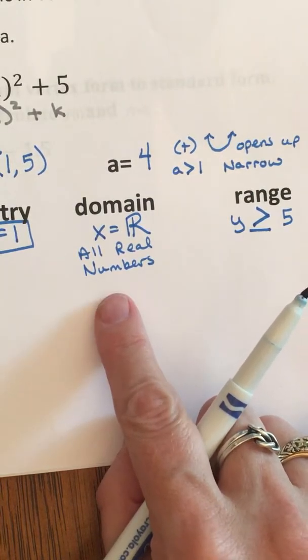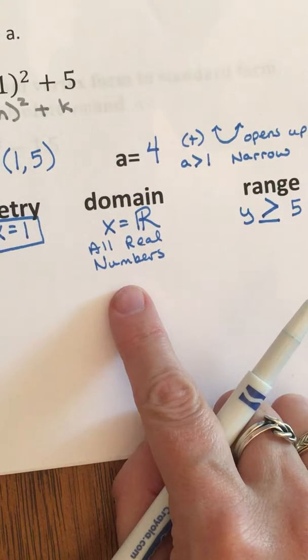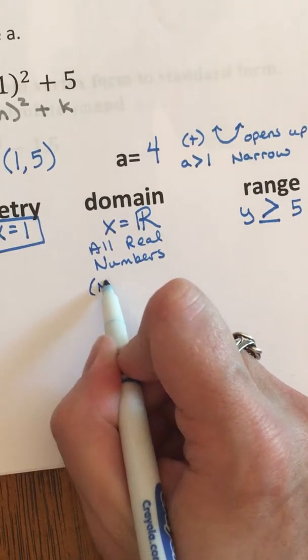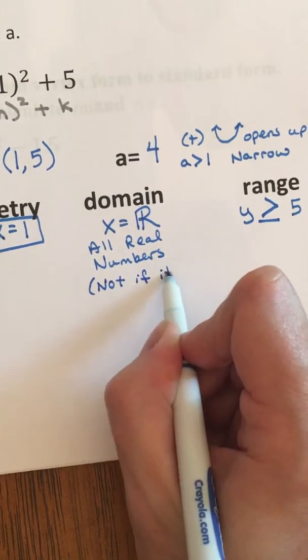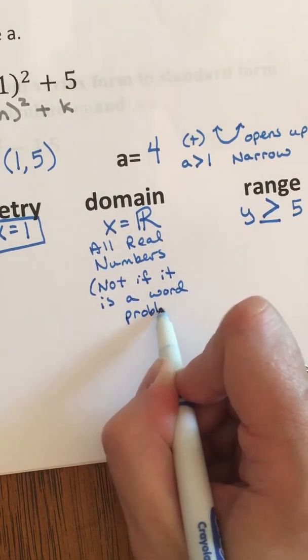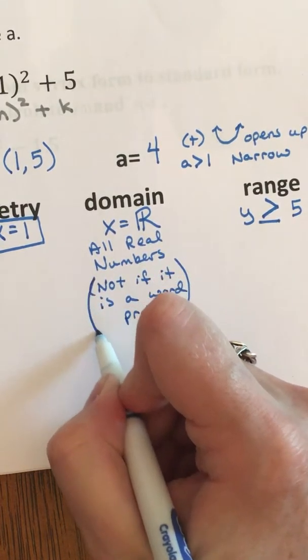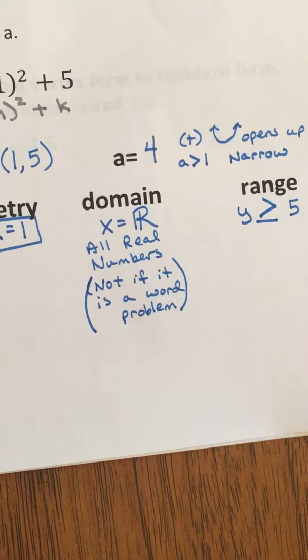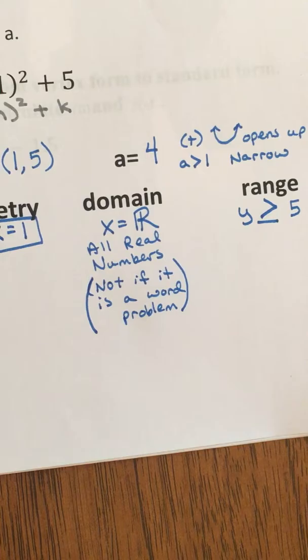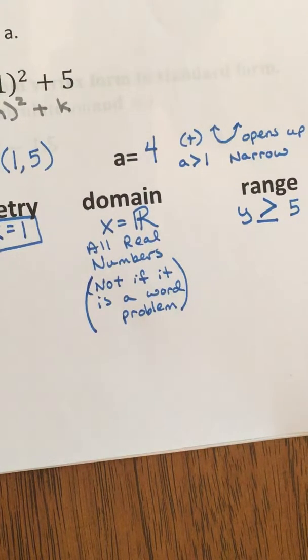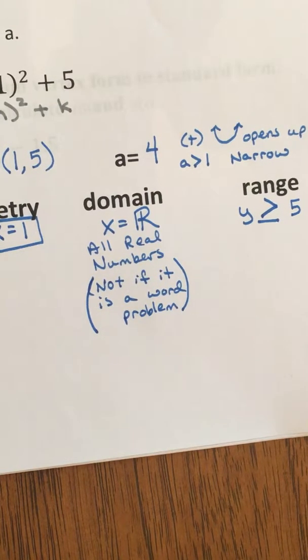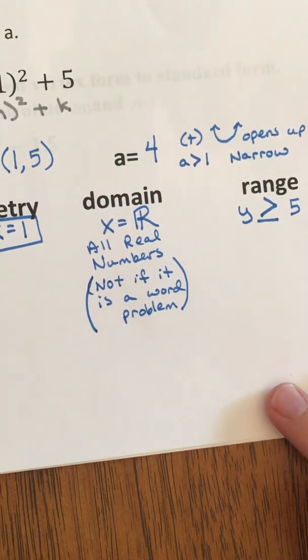Okay, now the one quick other thing to remember is this domain of all real numbers will not be the case if it's a story problem. Let's make a note. If you have a story problem, you can't go back in time. They just don't let you do that, because they don't usually put superheroes in the flash, and flash always gets in trouble when he goes back in time. It's just not good. So, that will be different when you have a domain in a word problem. All right, let's start graphing.